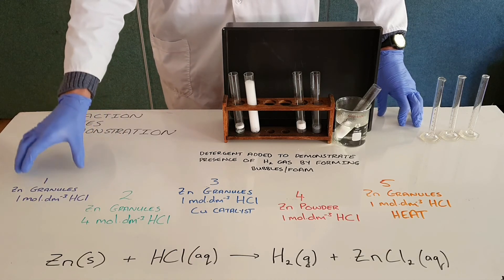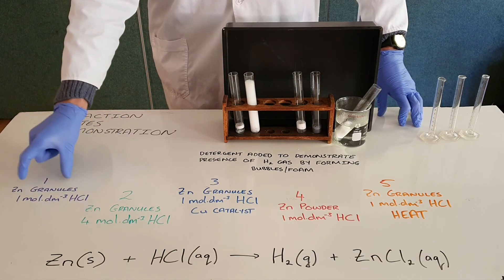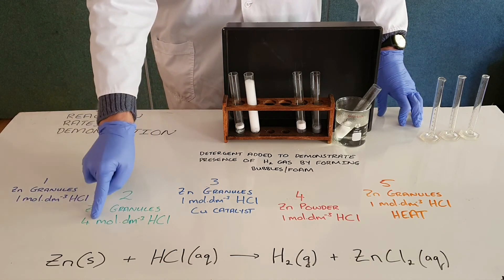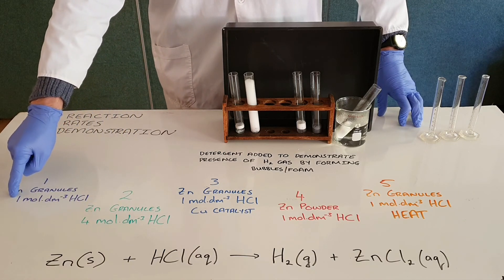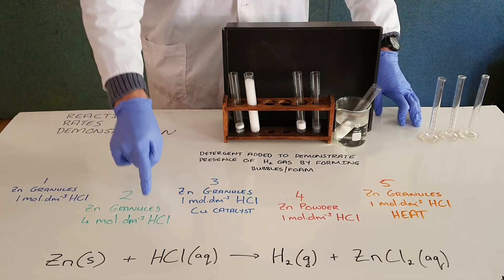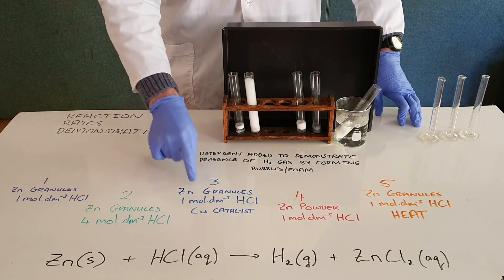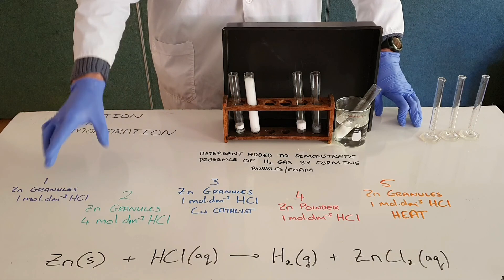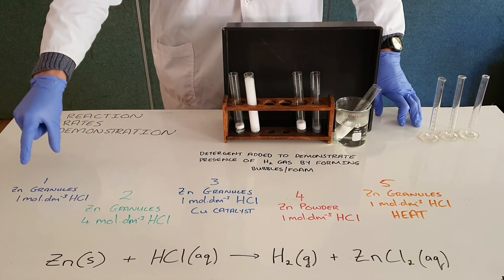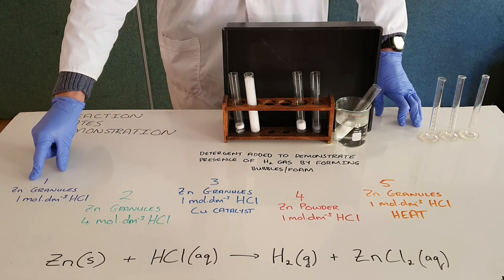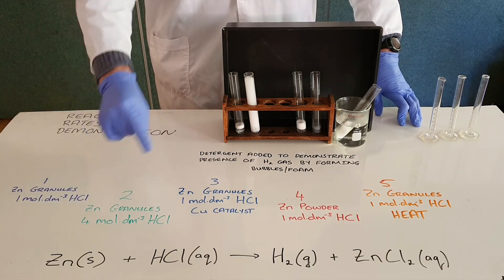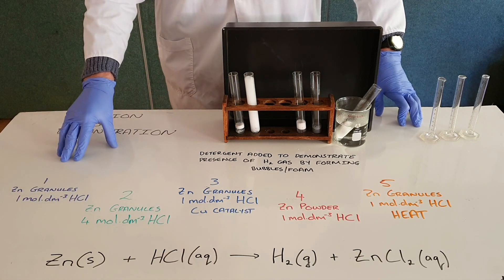This allows us to easily tell the difference between why this reaction is slower than this one, because the only change is a concentration change. We can compare this reaction to this reaction to this reaction because the only difference here is a catalyst. In the same way, that is why it's so important to have a controlled test tube which allows you to make individual changes for comparison sake.